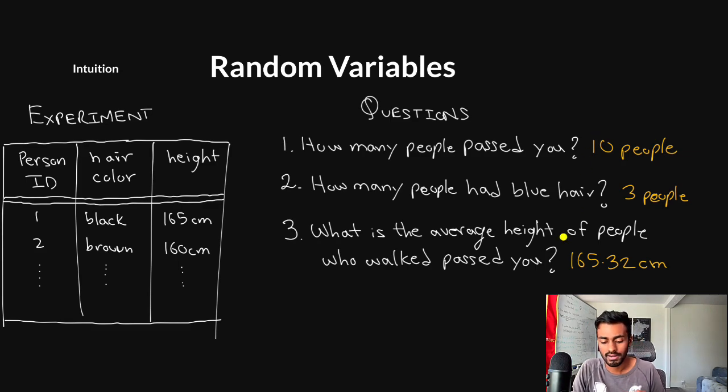And when we have measurable quantities, well, we can perform some mathematics on it, like we can do some probability theory. We can write, what is the probability that the number of people who passed you is over six people, for example, and many other questions that we can derive from this as well. So this is why random variables are super important. And let's now take a look at a formal definition with some mathematics.